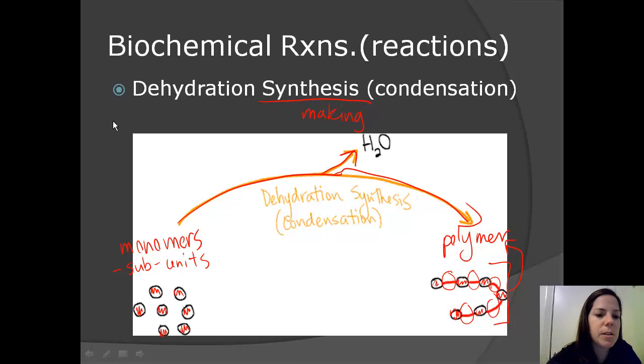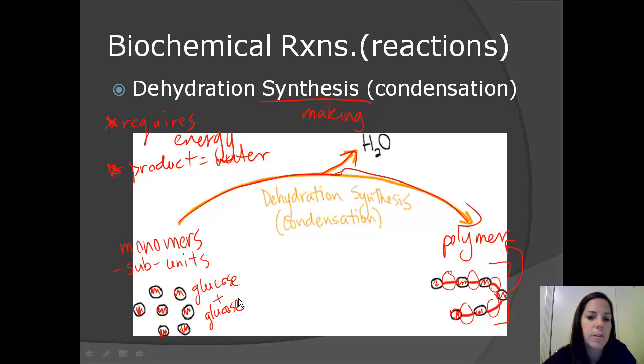So the two important things we want to remember about dehydration synthesis is that it requires energy. And the product is water. Now, if we wanted to think of an example that we could use for the body, we could say that these are all glucose monomers. So glucose plus glucose. And if many glucose molecules go through dehydration synthesis, then we're going to end up with glycogen. And glycogen is used to store energy in the liver.